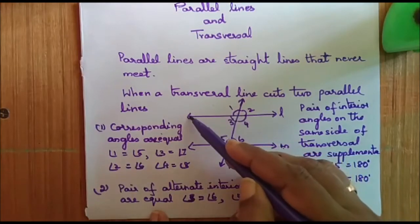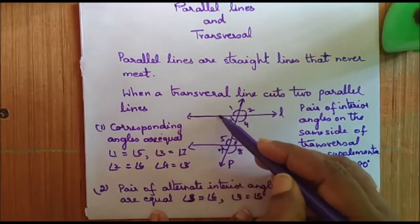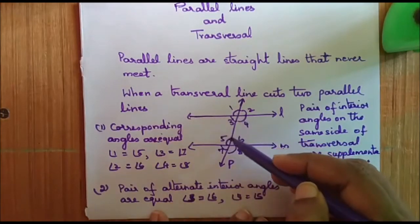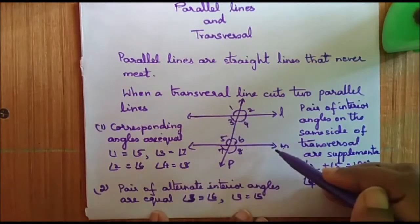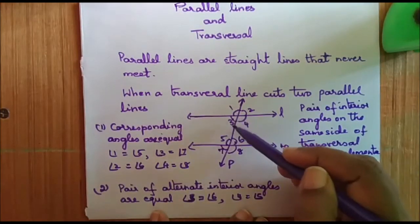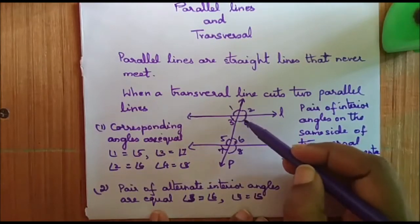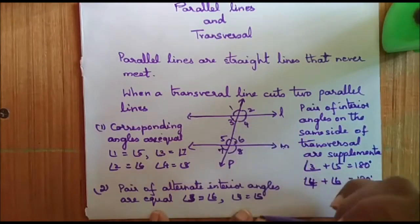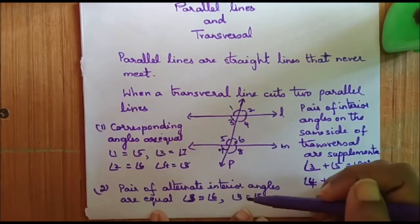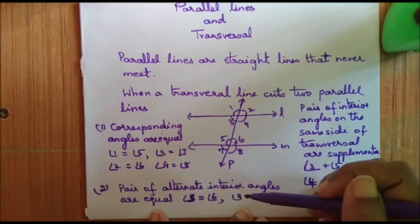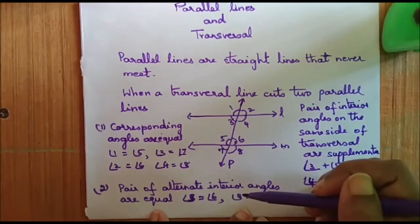It is just like forming a Z. Angles 3 and 6 are equal. Similarly, 4 and 5 are equal — these are the alternate interior angles.